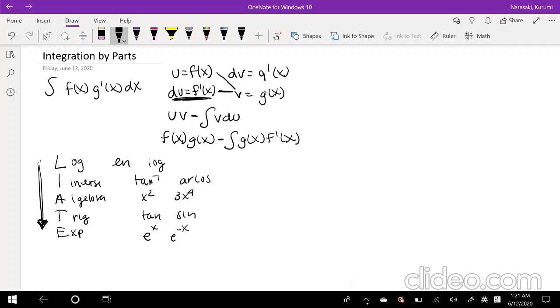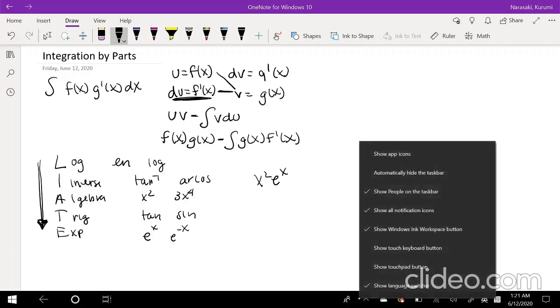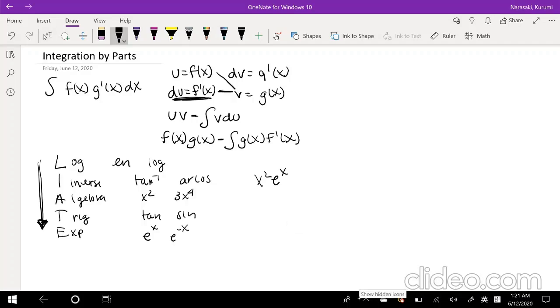Like, for example, if you have x squared e to the x, you always want to set, you go down the list. We have an algebra and exponential. So when you go down the list, the first thing you're going to hit is that algebra. So you want to set u equals x squared, and you want to set dv equal to e to the x.